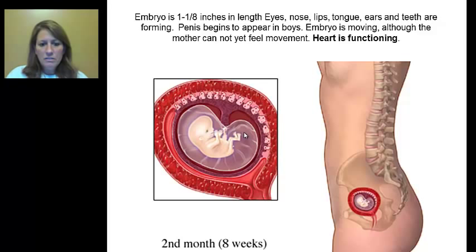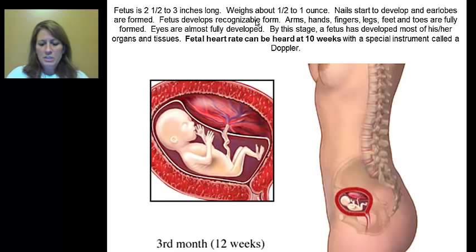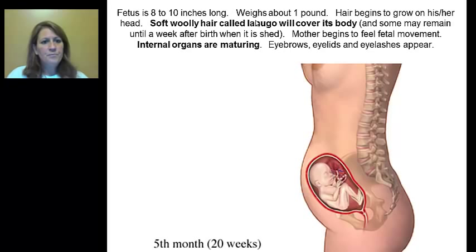During the third month, you can actually hear the heartbeat using a special instrument called a Doppler. The nails are developing, and the fetus is starting to look like a human form. Toes and eyes are fully developed. By about the fourth month, it is about seven inches long and seven ounces, you can identify the sex, and the fetus has a fine hair fuzz. It can actually suck its thumb. In the fifth month, there is a soft woolly hair called lanugo, a protective coating.